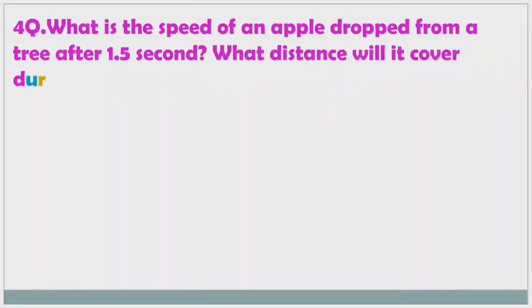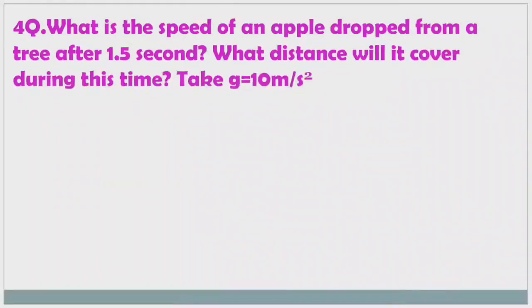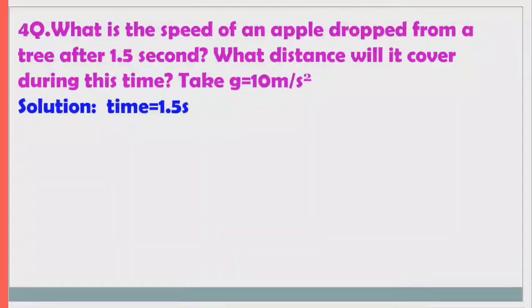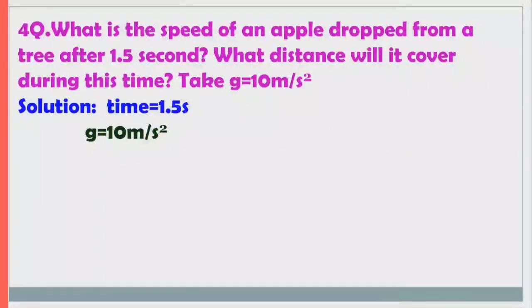Problem 4: What is the speed of an apple dropped from a tree after 1.5 seconds? What distance will it cover during this time? G = 10 m/s². Since the apple is falling freely, u = 0. Time is 1.5 seconds.